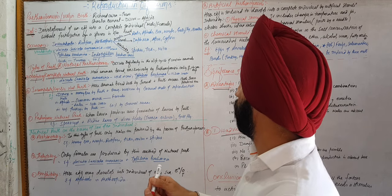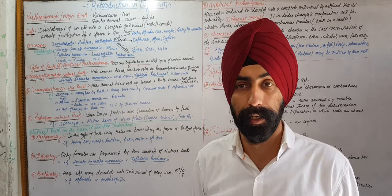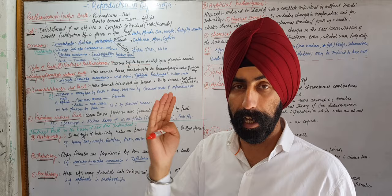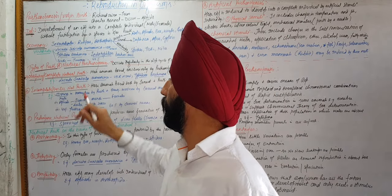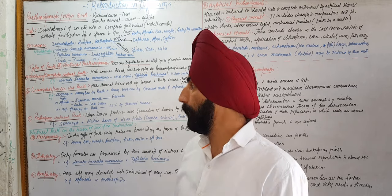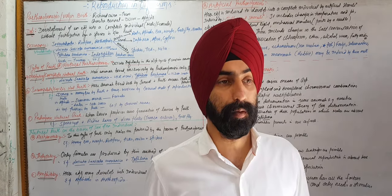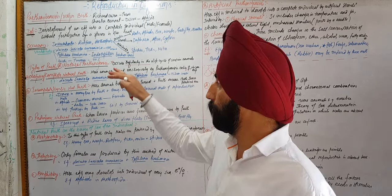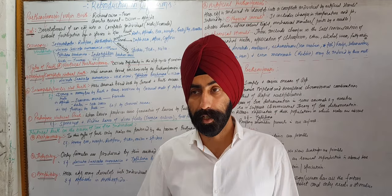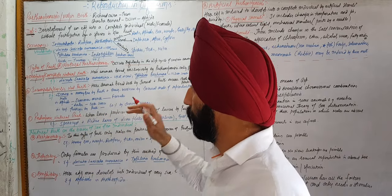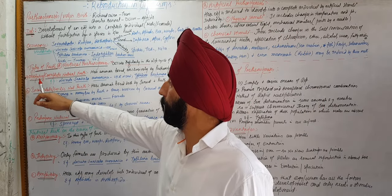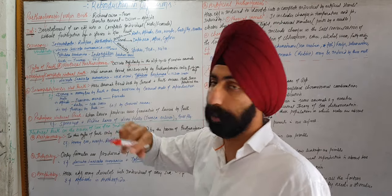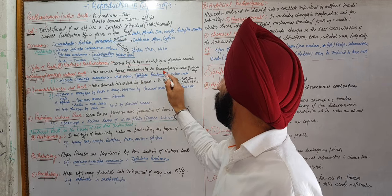Natural parthenogenesis occurs regularly in the life cycle of certain animals in a continuous form. Natural parthenogenesis is further divided into obligatory (complete) natural parthenogenesis and incomplete (cyclic) parthenogenesis. In obligatory or complete natural parthenogenesis, there is no other means — these animals are totally dependent on parthenogenesis for reproduction. No other sexual mode of reproduction is utilized. Animals breed exclusively by parthenogenesis.